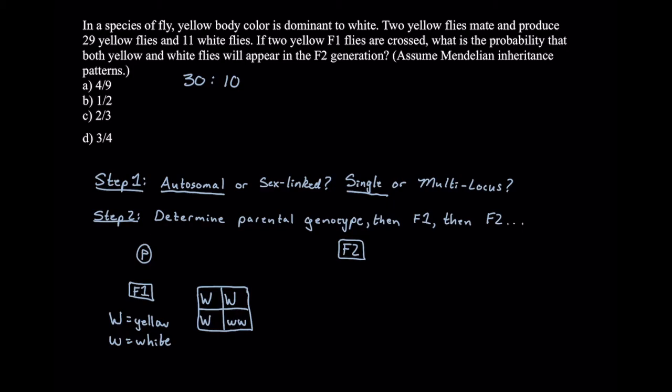We can intuit that our Punnett square looks like this: one big W big W, one big W little w, another big W little w, and finally two little w's. That's how we get our 3 to 1 phenotypic ratio. The only way for this to happen is if we cross two heterozygotes, big W little w crossed with big W little w. So in our parental generation, we had a heterozygous fly crossed with another heterozygous fly, and now we've determined the genotypes of our F1 generation.